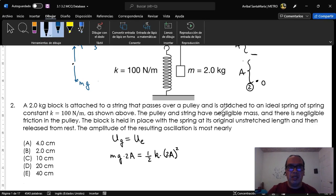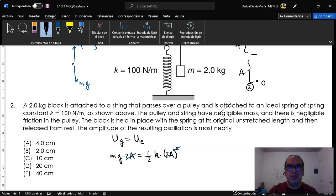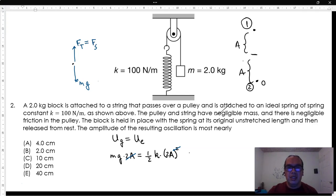We can simplify, and a little algebra tells us that the amplitude is equal to Mg divided by k.